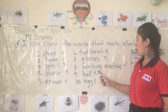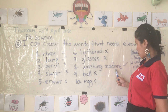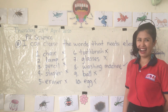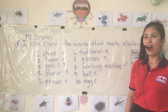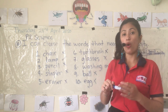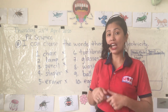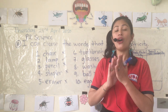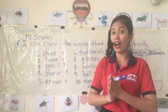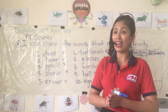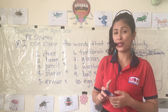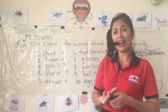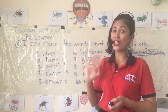So again, let's go back and check the words: chair, lamp, pencil, stapler, eraser, toothbrush, glasses, washing machine, ball, and egg. That would be all for today. Thank you very much for your patience. Please always stay kind and responsible. Goodbye and have a nice Thursday!